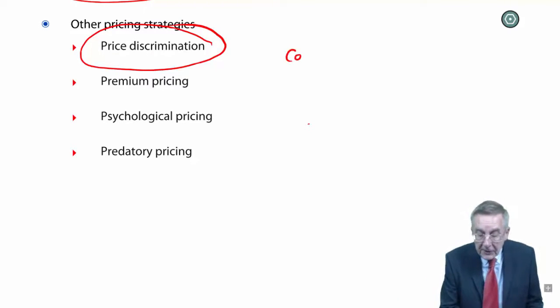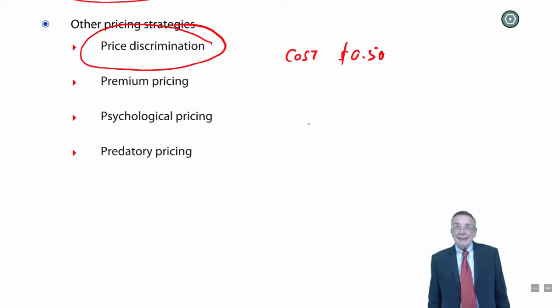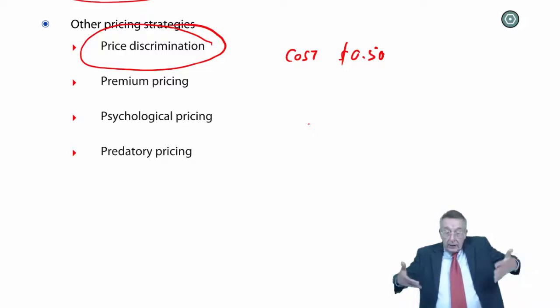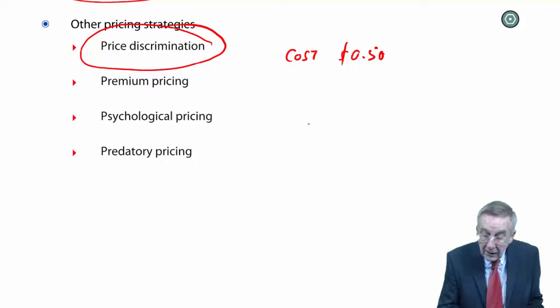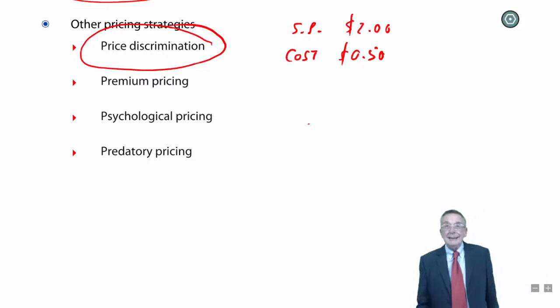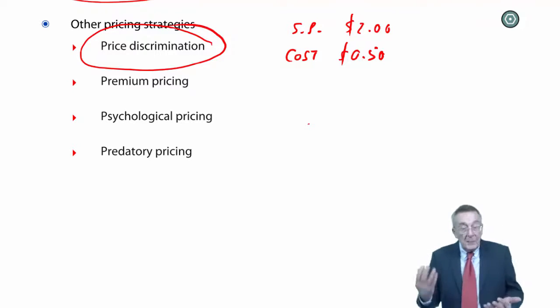I'm making up figures, obviously. Suppose the cost to manufacture a jar of coffee is 50 cents. Anything more than 50 cents will be profitable. Maybe people in Europe can afford to pay two dollars. So the selling price in Europe, two dollars. Nice big profit. No point in trying to sell it for two dollars in India. They can't afford it. And so what do we do? We say, right in India, we'll just charge a dollar. Anything more than 50 cents is making us more profit. But we charge as much as people can afford in the place we sell it.